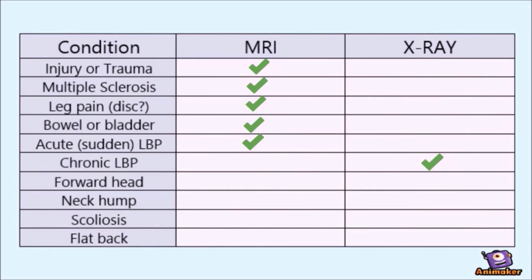If you have forward head posture, the head is sitting ahead of your shoulders. Usually that means the curve in your neck has been altered, and it's the bony vertebra that make up the curve — so we want an x-ray. What about neck hump? A neck hump itself is usually the soft, squidgy fat you feel at the base of the neck, but the reason for the neck hump may be structural — the curve in the neck is flattened or reversed. Curves are created by the alignment of the bony vertebra, so x-ray.